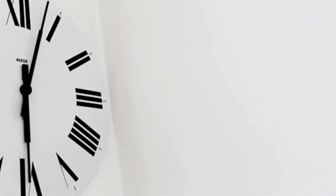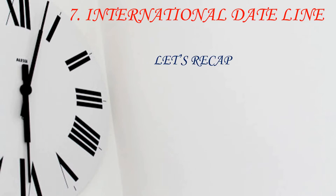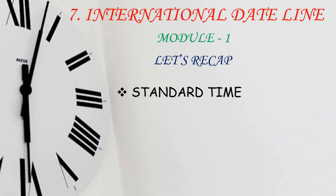Before proceeding further for Module 2, let's have a quick recap of what we studied in Lesson No. 7, International Dateline in Module 1. In the beginning, we studied the concept of Standard Time. Standard Time is determined by the 0 degree meridian, also known as the Prime Meridian, which passes through Greenwich. This time is also known as GMT, that is Greenwich Mean Time.